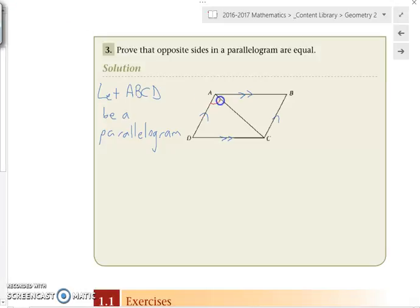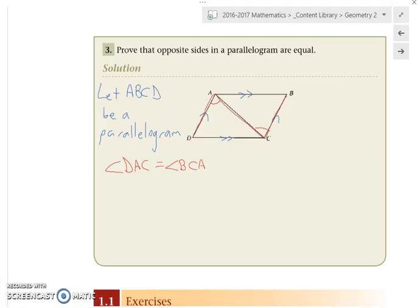Would you agree with me then that angle DAC is equal to angle BCA? Yes. Why? It's a Z-angle thingy. But unfortunately we need to know the name of the Z-angle thingy. And it's really weird because Z is at one end of the alphabet and A is at the other. That was a hint. Alternate. So they are alternate angles.